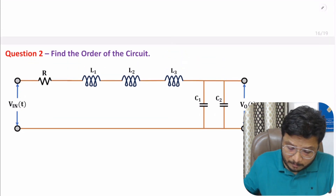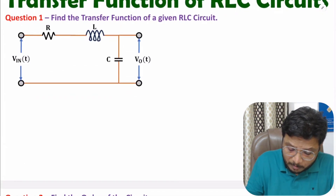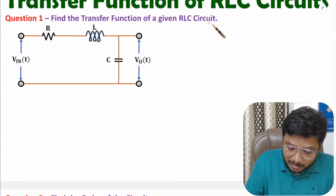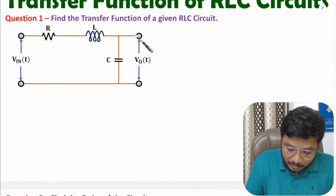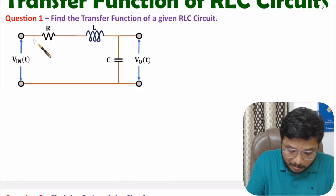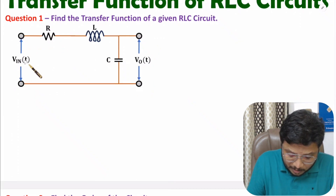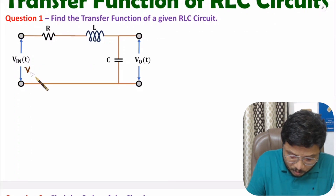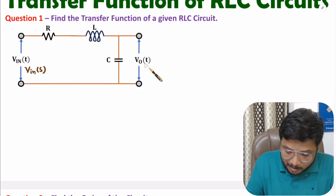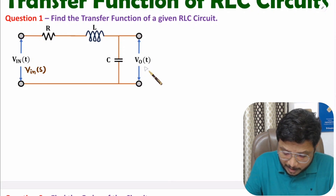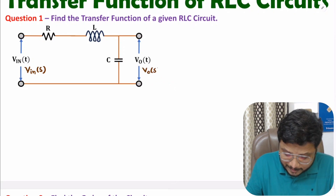In the first question, I will explain calculation of transfer function for a given RLC circuit. To find a transfer function, we need to convert this circuit into the Laplace domain. Here we have input Vin(t), which in the Laplace domain will be Vin(S). Here we have output Vo(t), which in the Laplace domain is Vo(S).